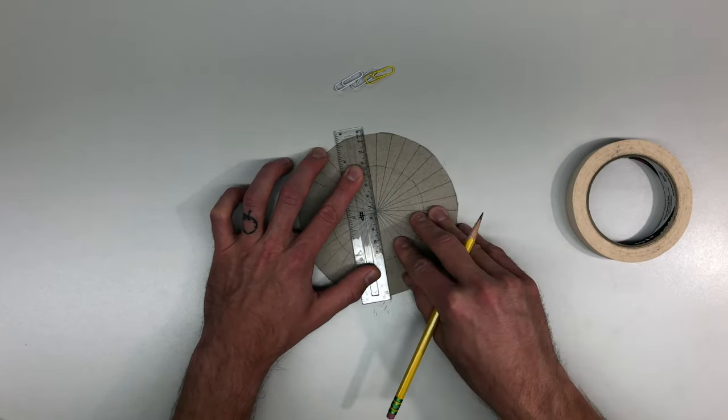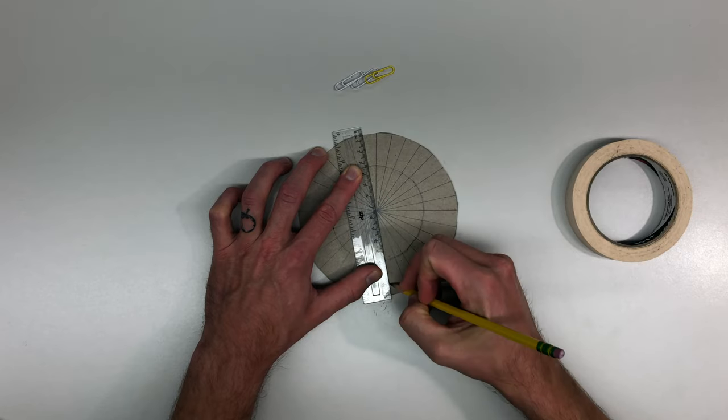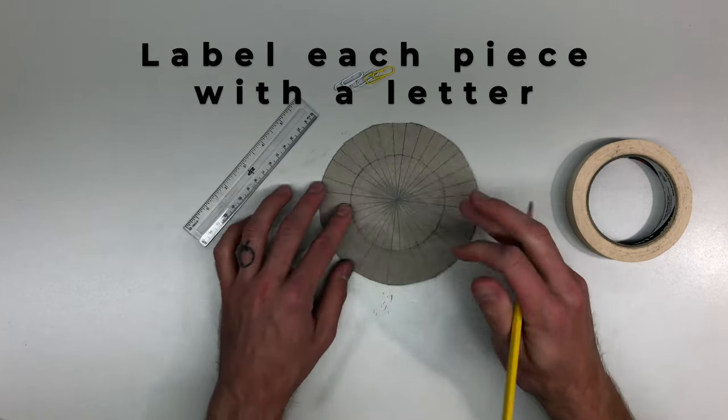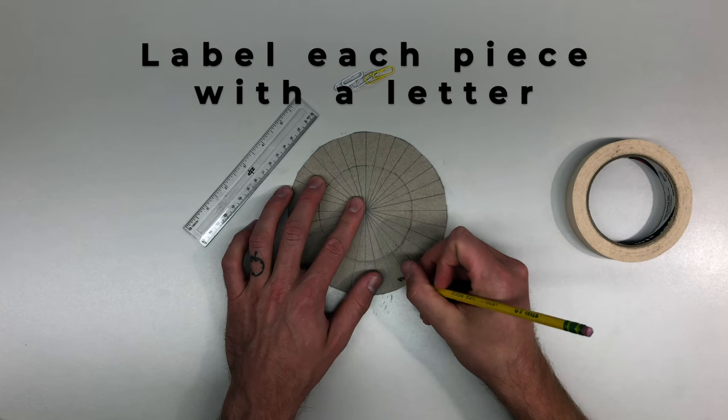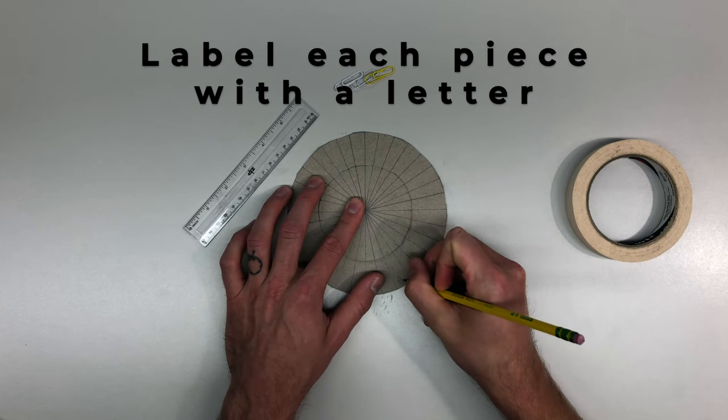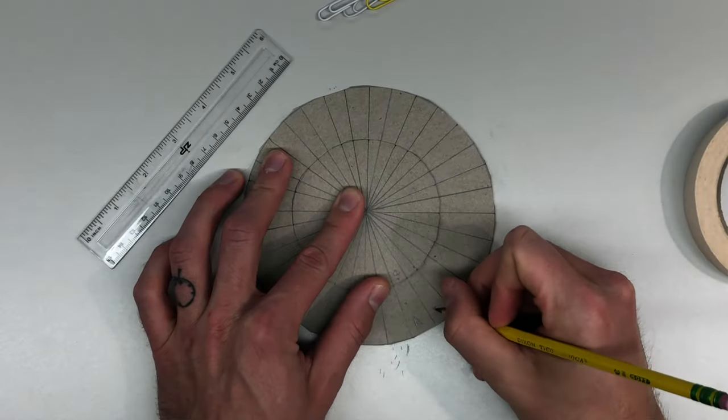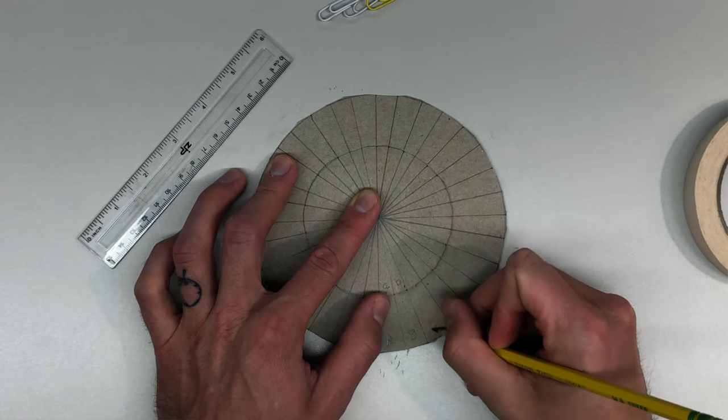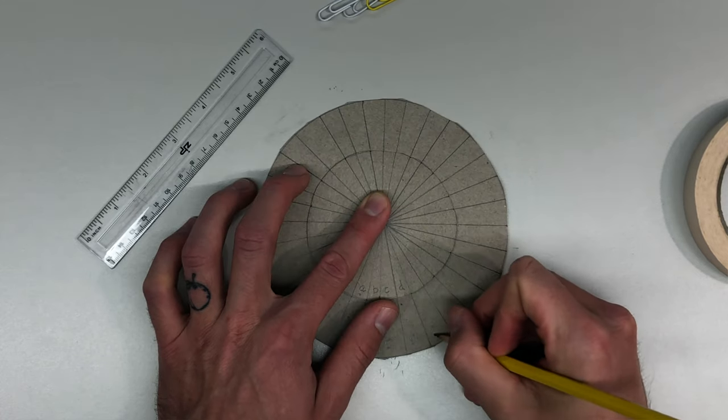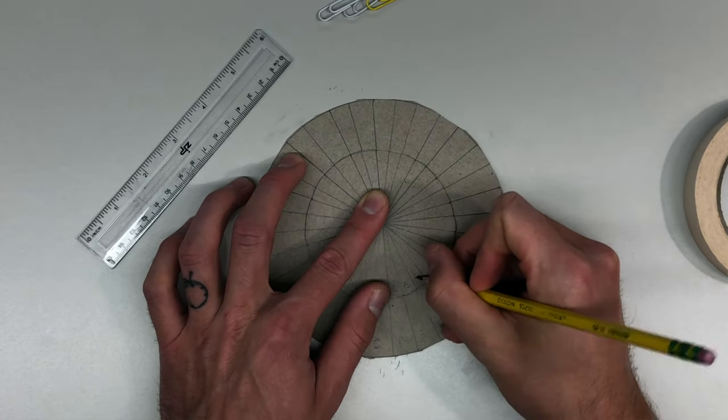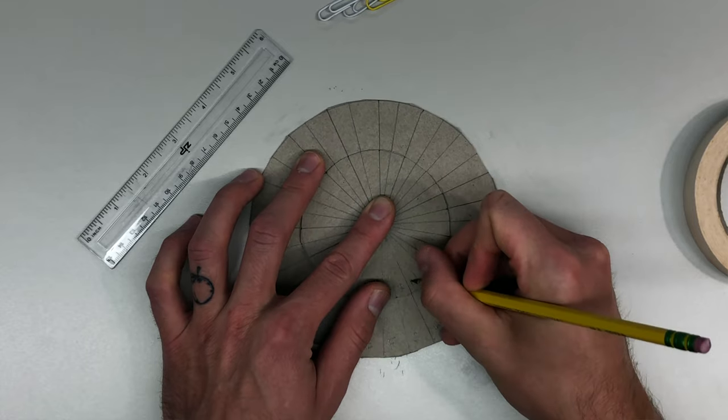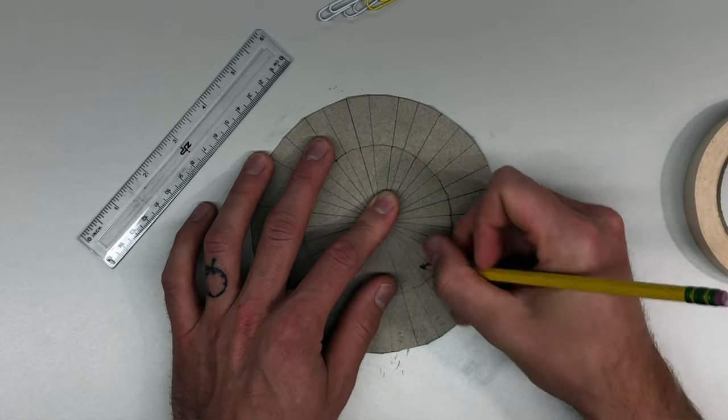All right, now that I'm done drawing the lines for my cipher, I'm going to label each piece with a letter. This is where it gets fun. For this video, I'm going to use the English alphabet for both circles, but you can create your own secret code by using numbers or symbols. Use your imagination.